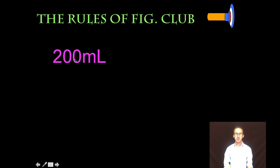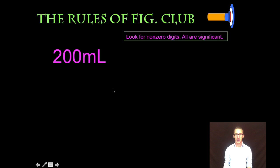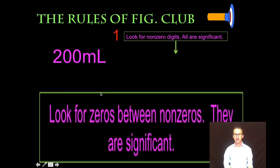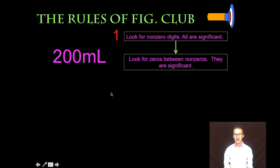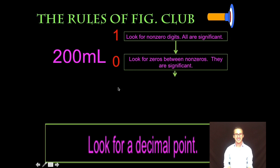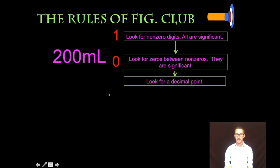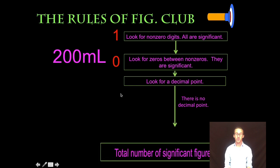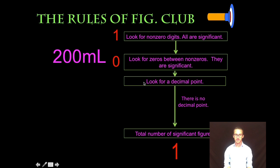Let's try another one: 200 milliliters. Working through the rules of big club. Rule number one: look for non-zero digits — we only have one non-zero digit, the 2. Rule number two: look for zeros between non-zeros — I have a couple of zeros, but although there's a non-zero on one end, there's not one on the other, so these are not significant. Rule number three: look for a decimal point — there isn't one, so I've arrived at my total. In this measurement, there's only one significant digit: the 2.